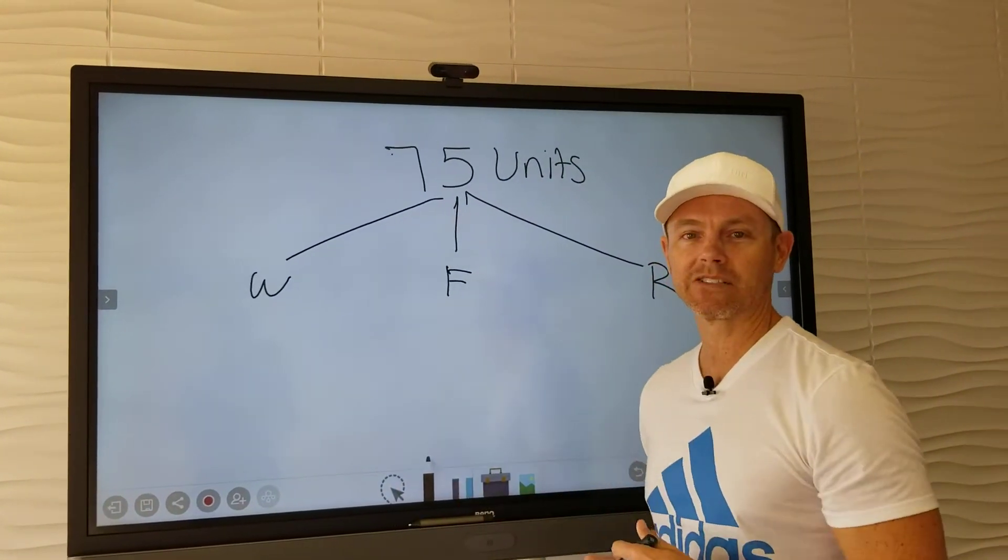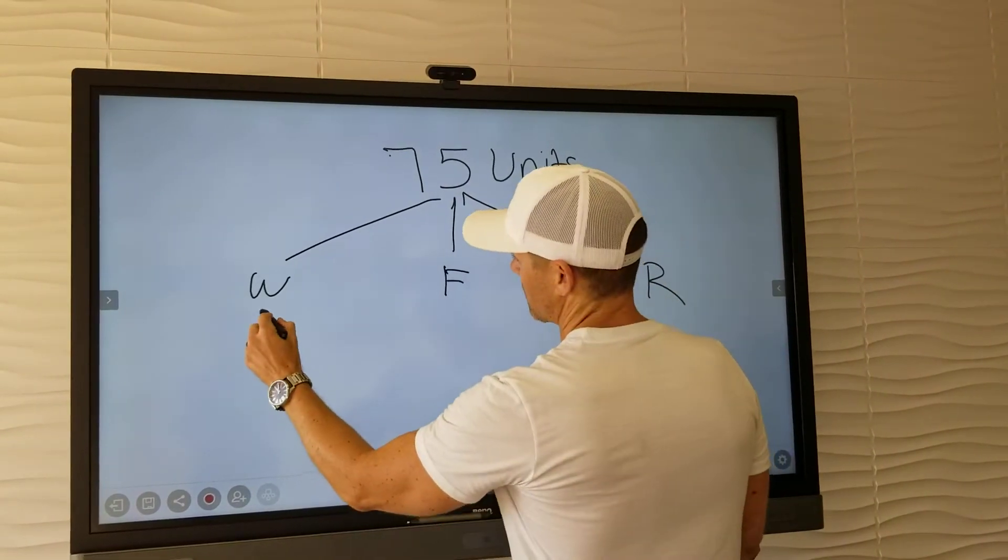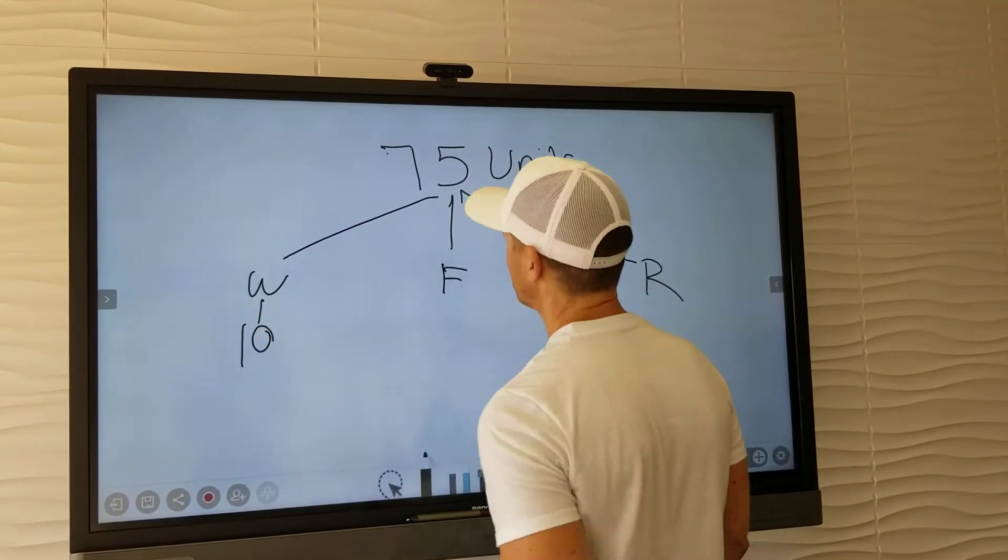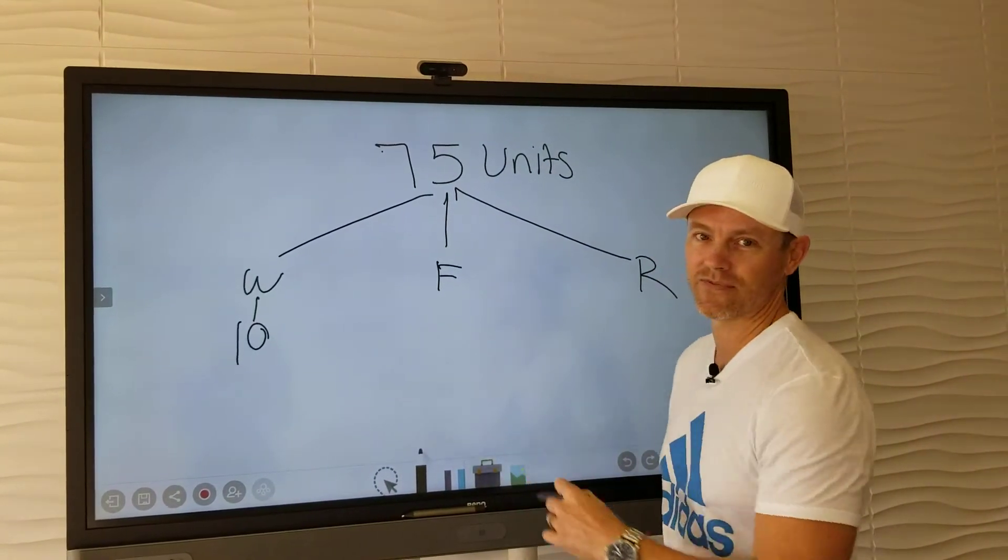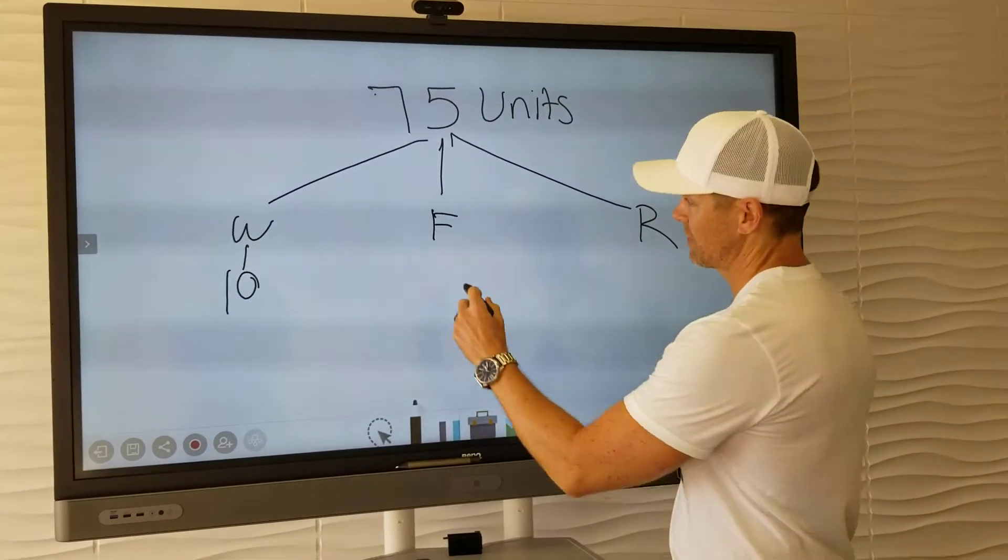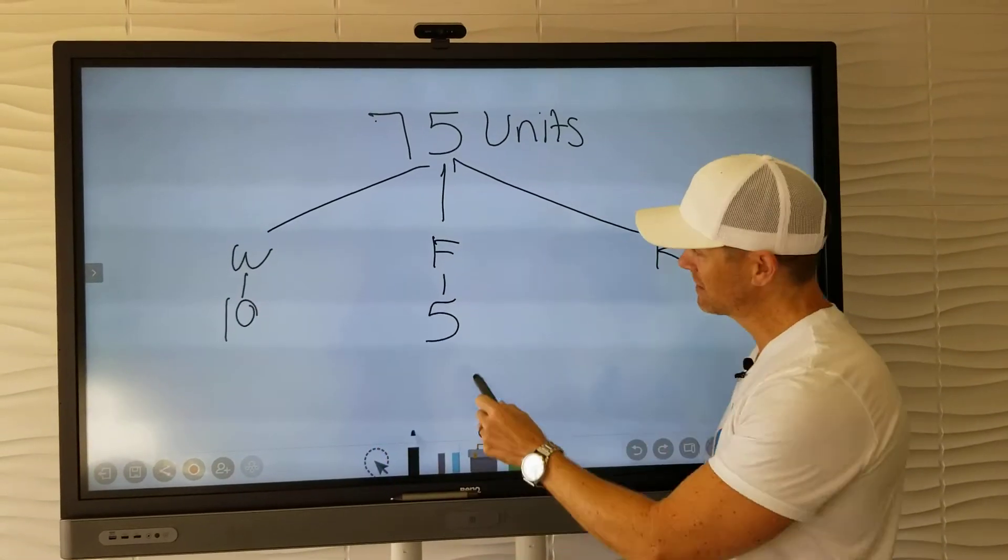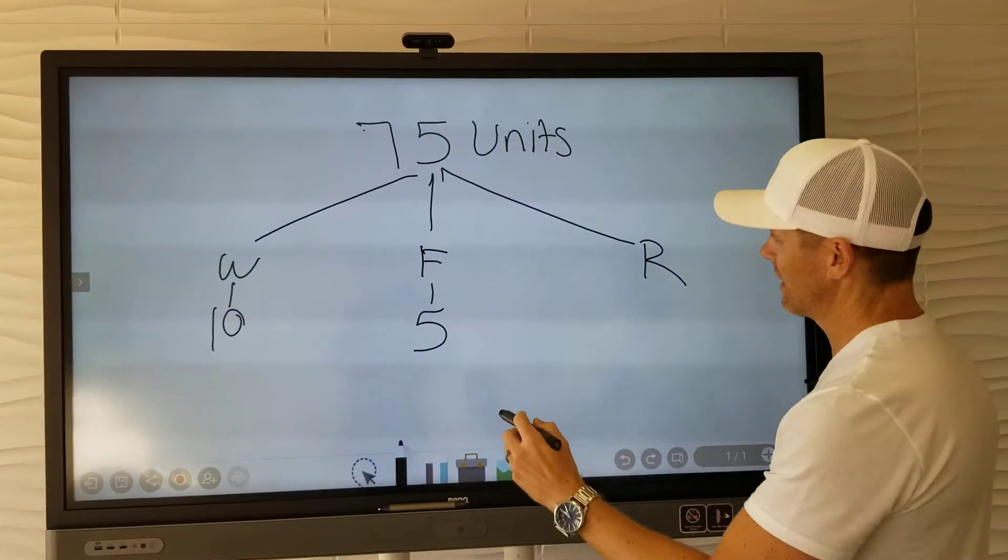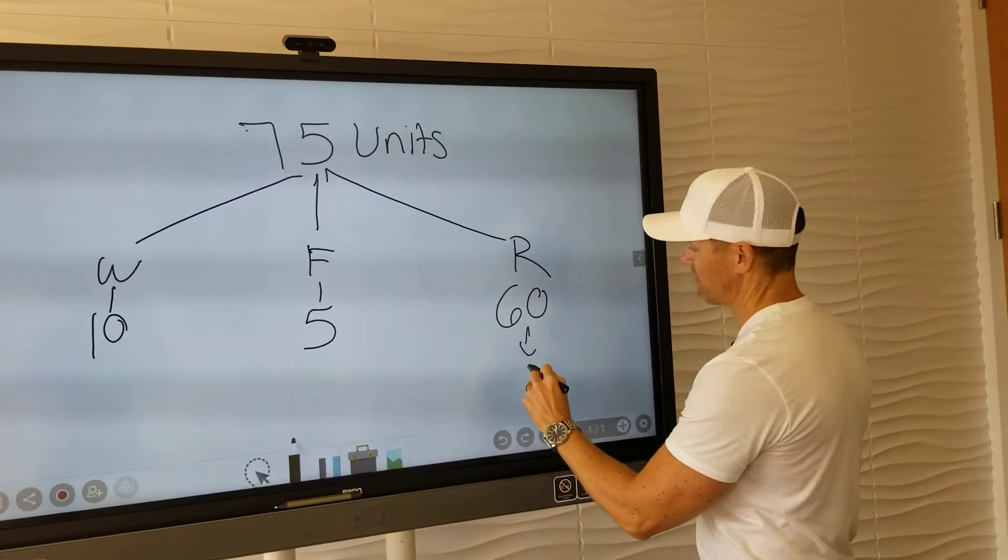So what Frank does when he's evaluating and doing due diligence on the portfolio: he looks at it and says, 'I'm going to wholesale 10 of these units.' Then he looks at the rest of the portfolio and says, 'There's five in there that if I clean them up a little bit, I can either wholesale them or take them to retail as flips.' So he wholesales 10 of these units, flips five of them, and the remaining 60 units he keeps in his portfolio.